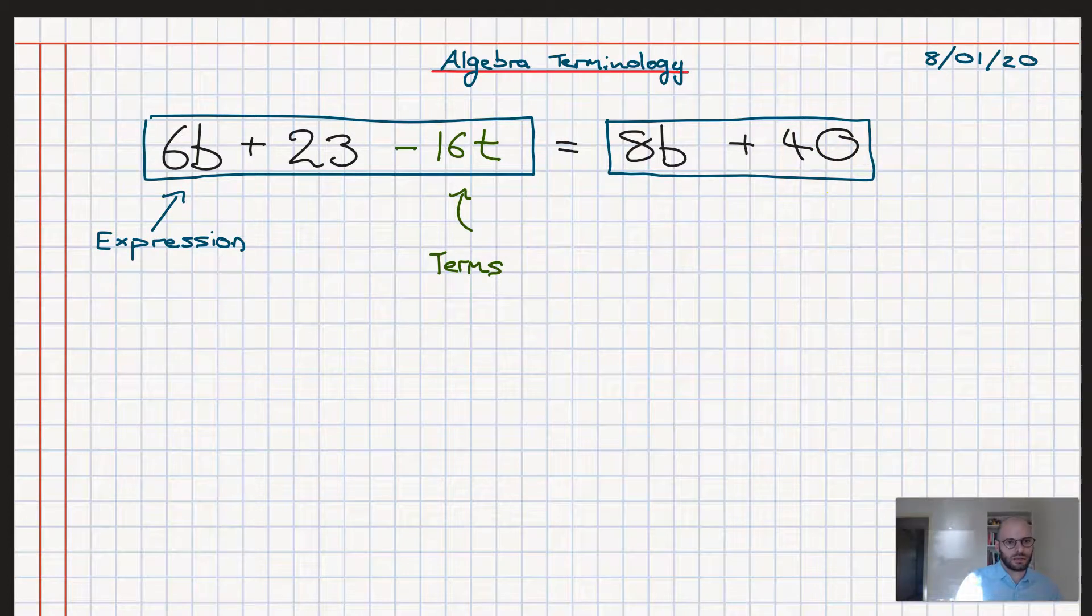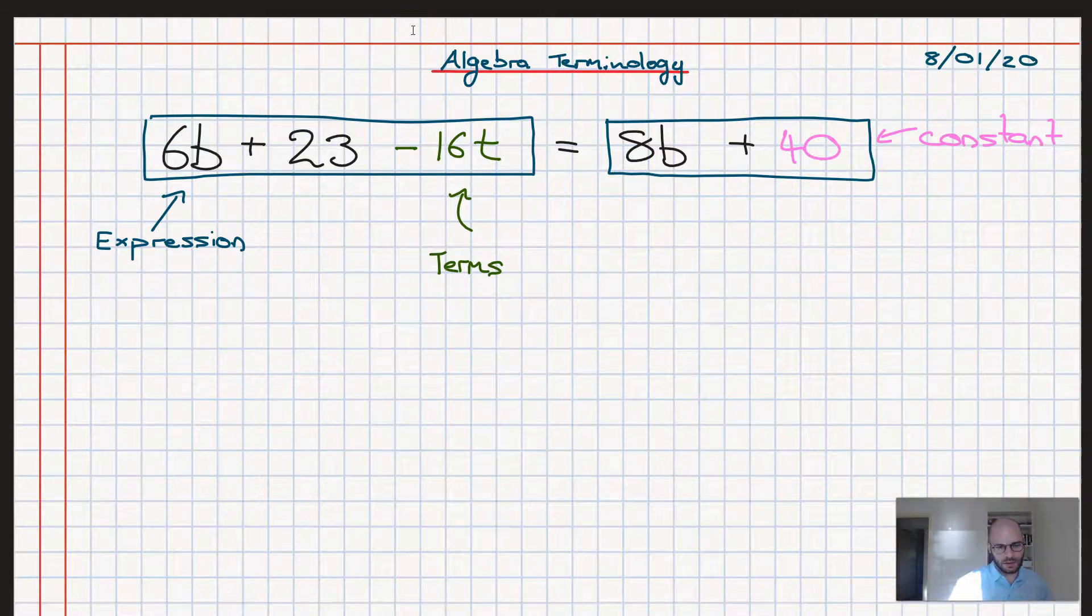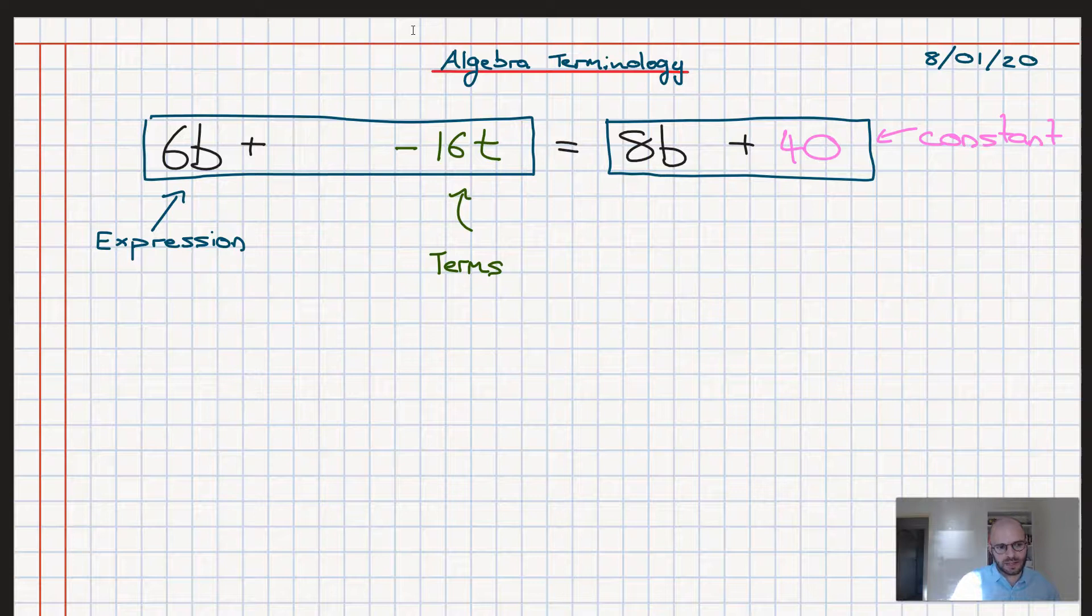So the one where we have the number simply by itself, we call that a constant. So in the expression on the right hand side here, this 40 or plus 40, that's a constant. Similarly, on the left hand side, the 23 is also a constant. So that's one sort of term.